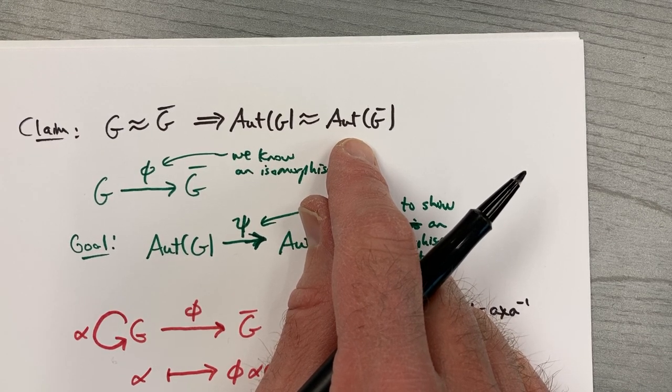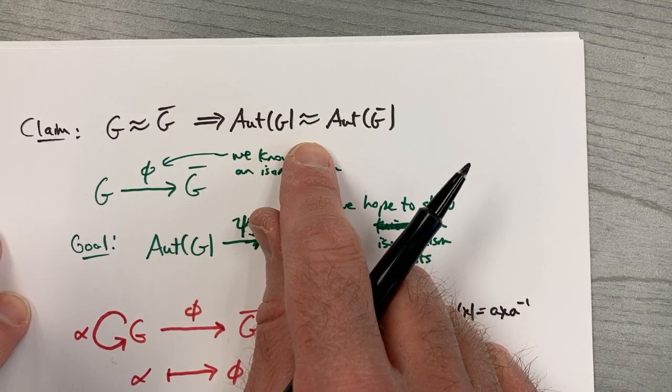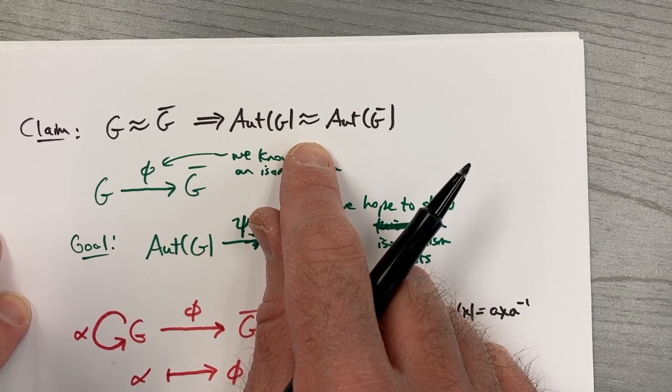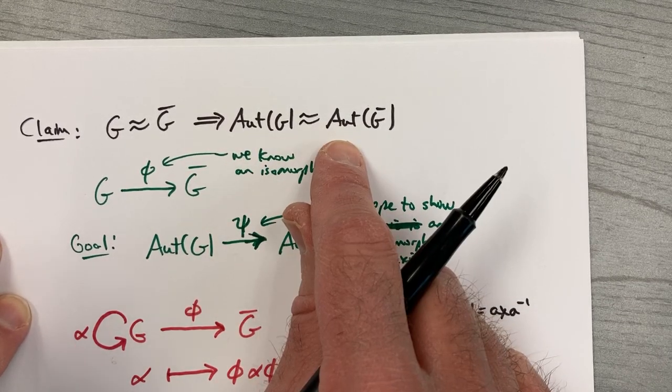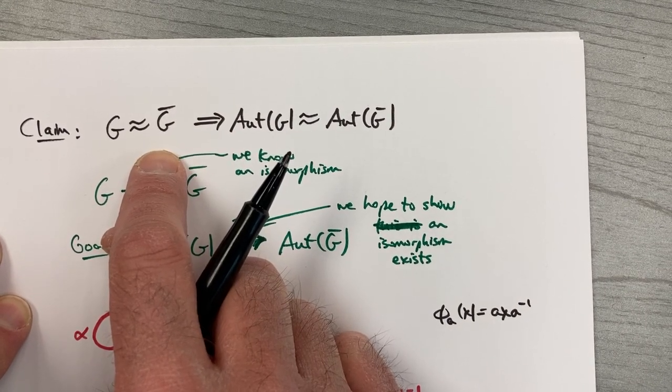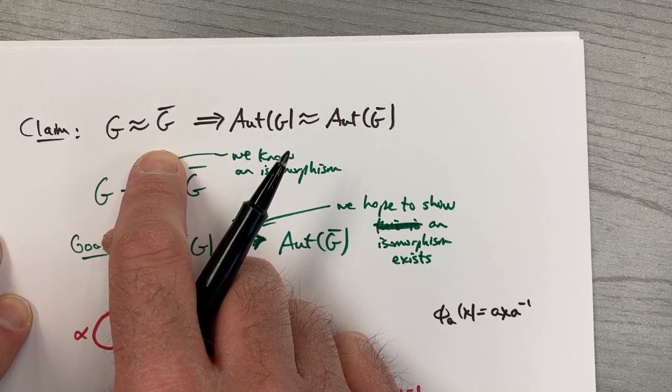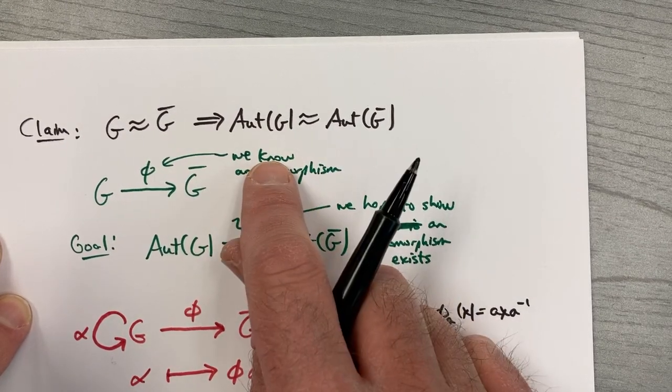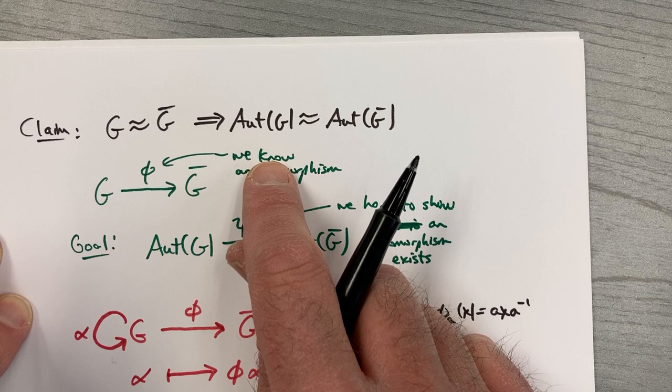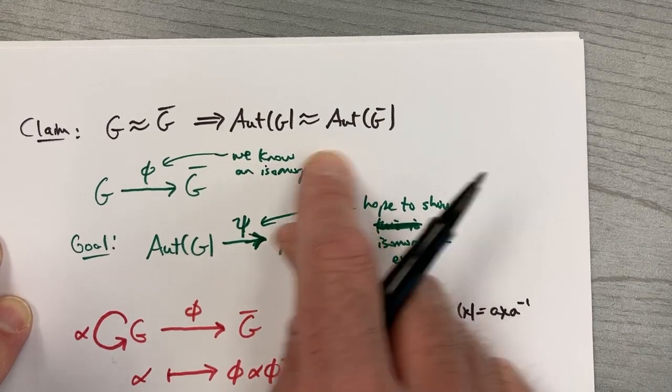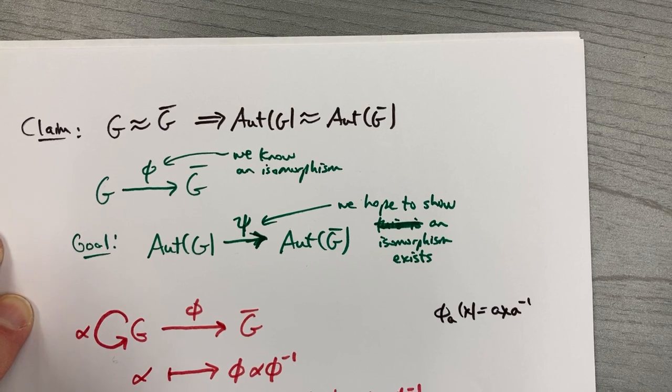Here's a real important point about it. Since this implication is true up here, this claim, its contrapositive is also true, because contrapositives are equivalent. What would the contrapositive say? The contrapositive would say that if Aut(G) and Aut(G-bar) are not isomorphic, then G and G-bar would also not be isomorphic. That sounds useful. Trying to decide if two groups are isomorphic, or maybe you suspect they're not isomorphic. Maybe it's easier to prove their groups of automorphisms are not isomorphic. Maybe that's easier. If you can do that, then you prove G and G-bar are not isomorphic.